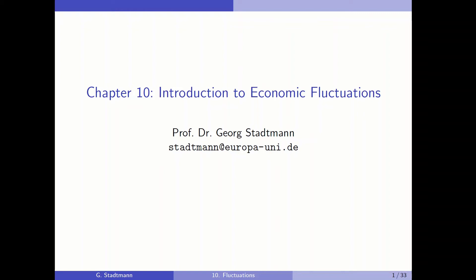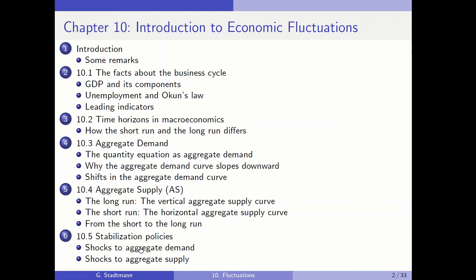Welcome everybody to chapter 10, where we talk about the short-run fluctuations of the business cycle. This is the structure of this chapter: we'll talk about the stylized facts in the beginning, then introduce a model where aggregate demand and aggregate supply play a role, and then we will work with this new model.